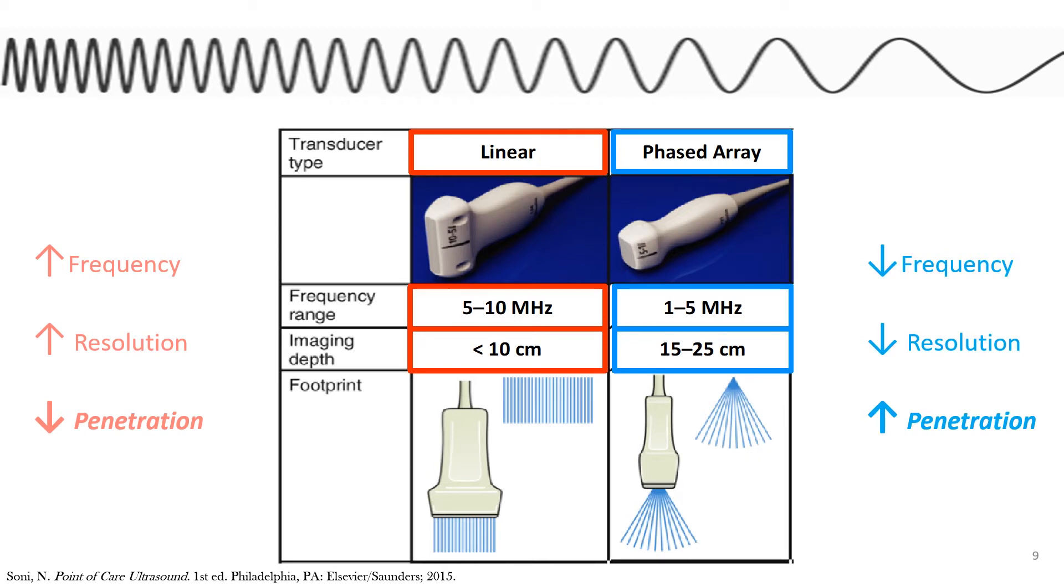The phase array probe, also known as the cardiac probe, works with low frequencies from 1 to 5 megahertz with a greater imaging depth of up to 25 centimeters and will show a triangular image on the screen.